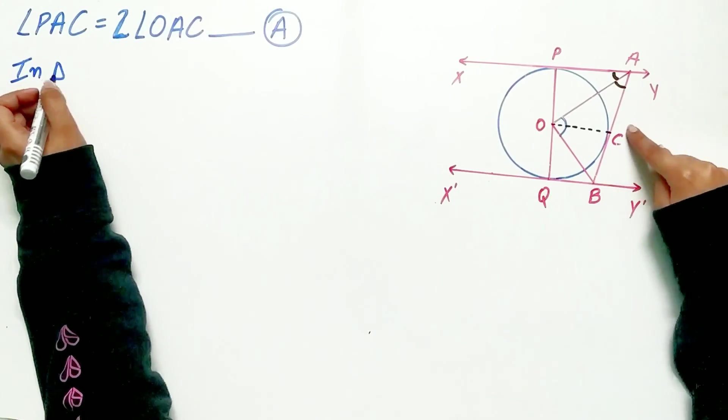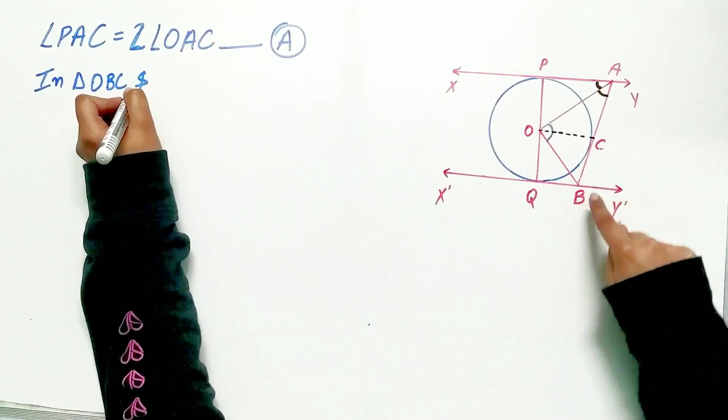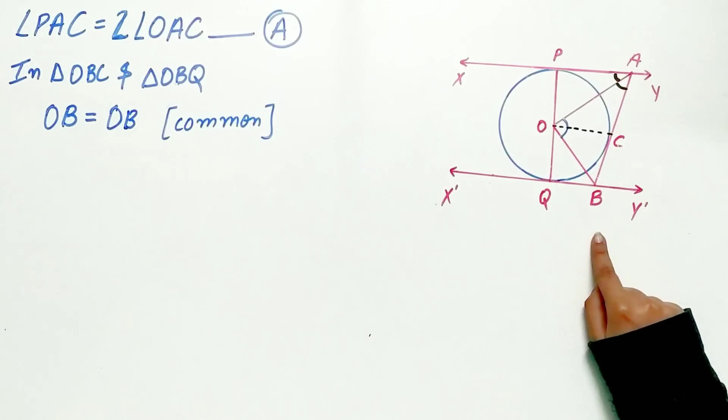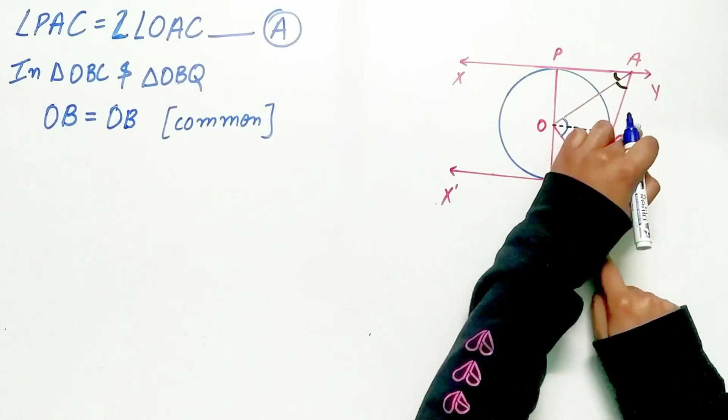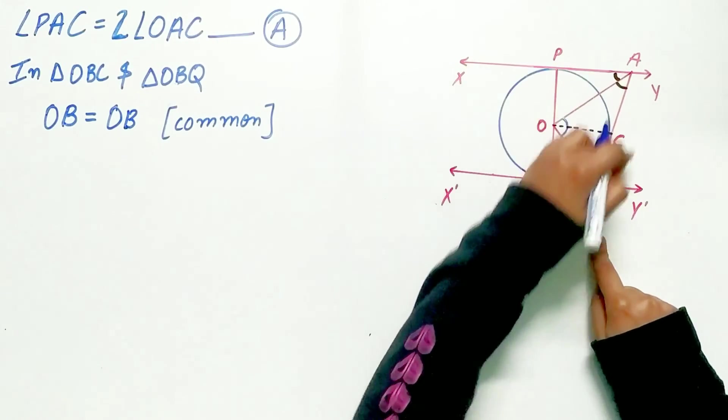Triangle OBC and triangle OBQ. B is an external point. It lies outside the circle. BQ and BC are tangents to the circle.